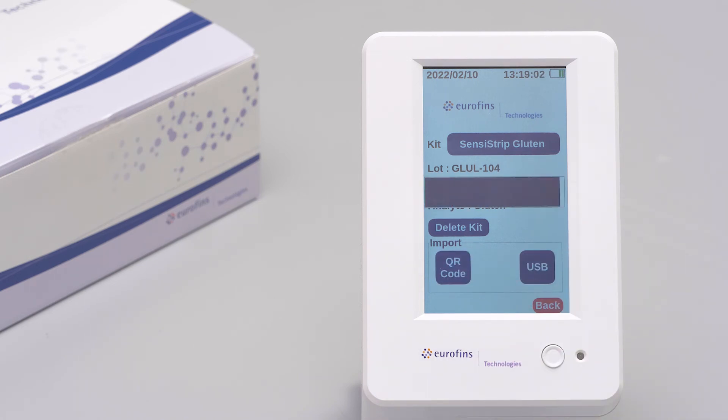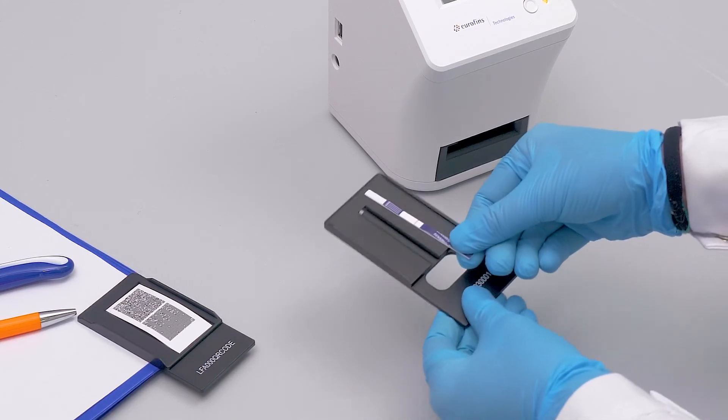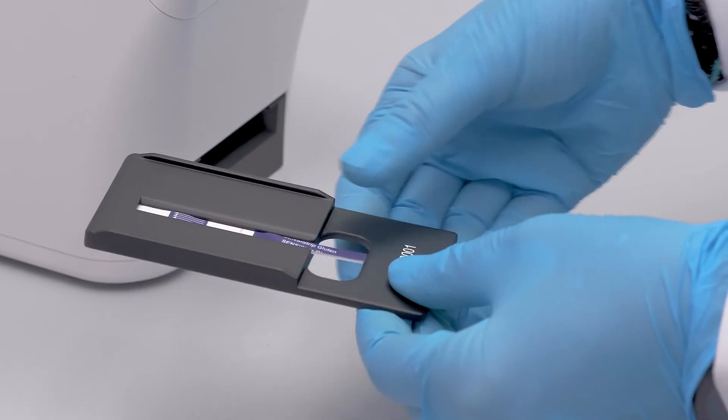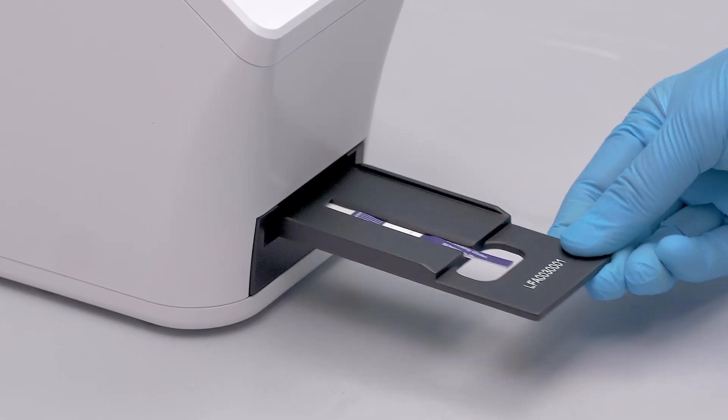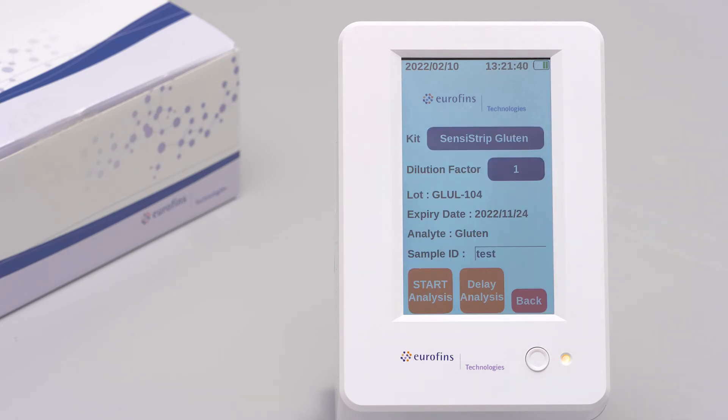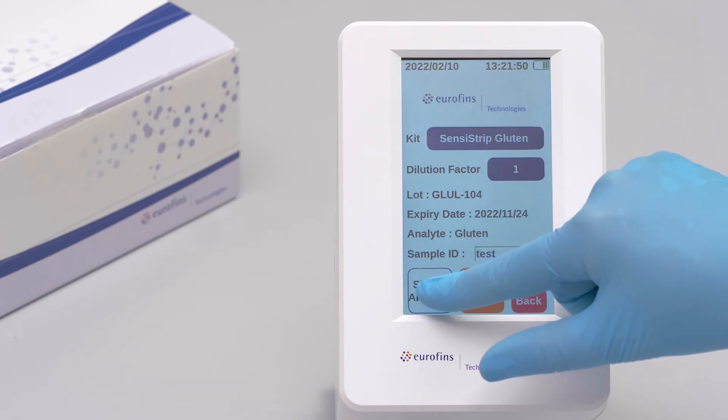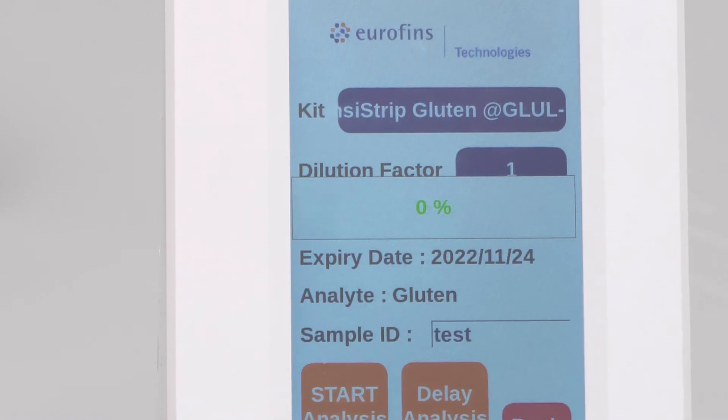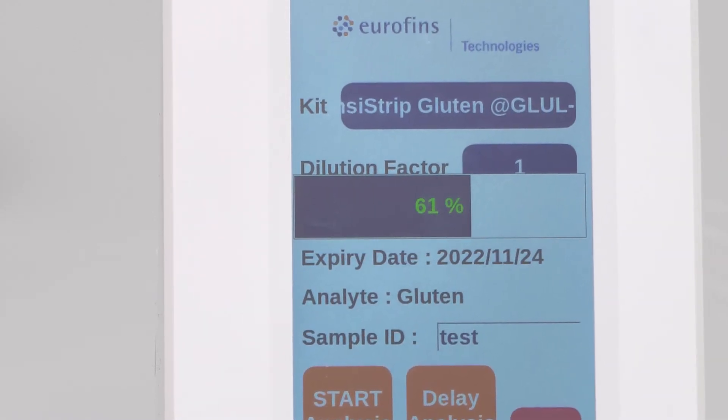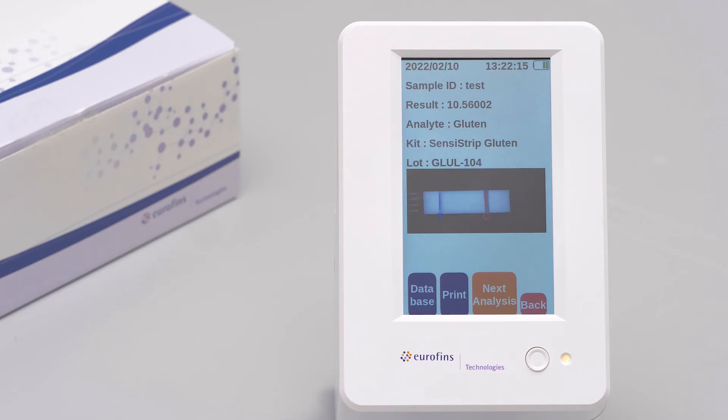Select the test type, the dilution factor applied, and the sample name. Then proceed with the analysis by pressing the start analysis command. The reader will return a quantitative result which can be exported by using the reader's USB port to a computer.